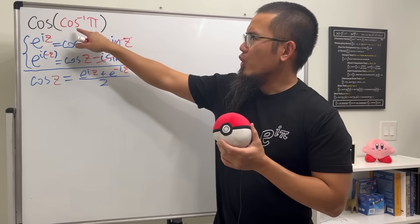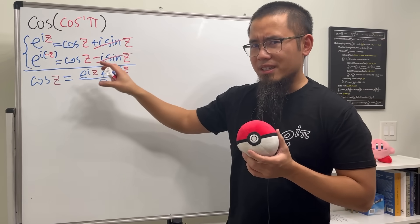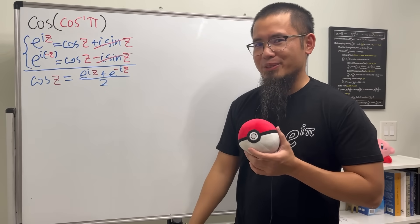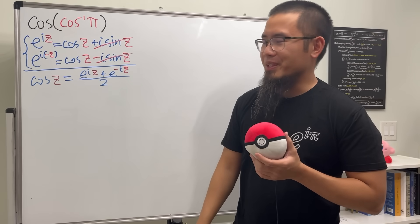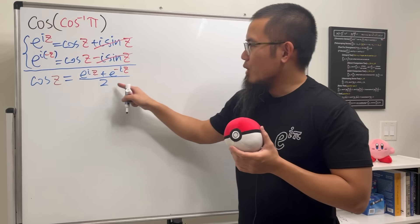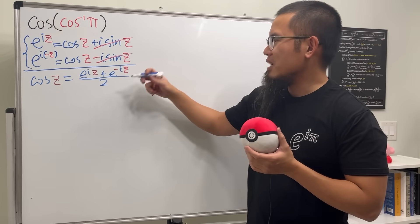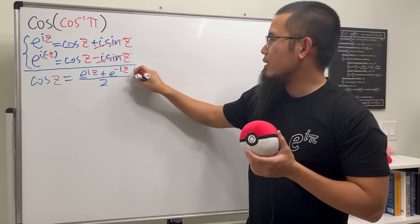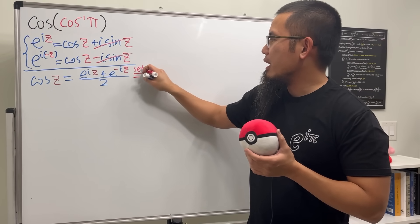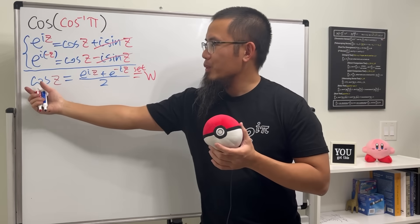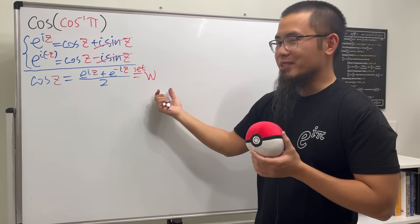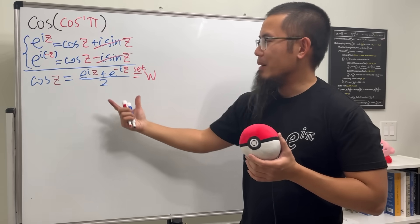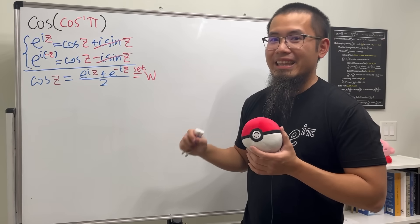Remember we are doing this inside out, so we shall come up with a complex definition for the inverse cosine. This is how we can do it: we are going to call the argument some other complex number — let's say cosine z equals w. The goal is we are going to take the inverse cosine on both sides, but rather we will solve for z directly.